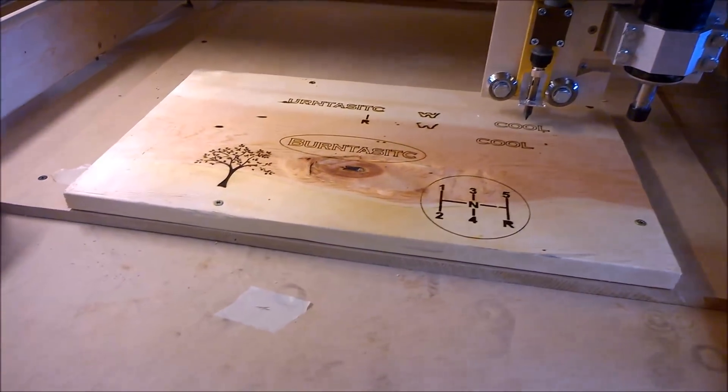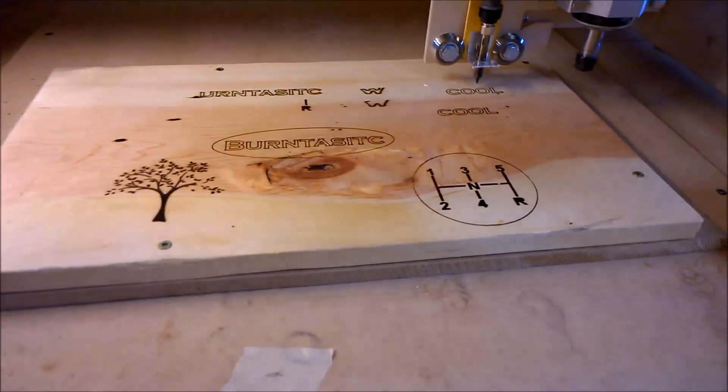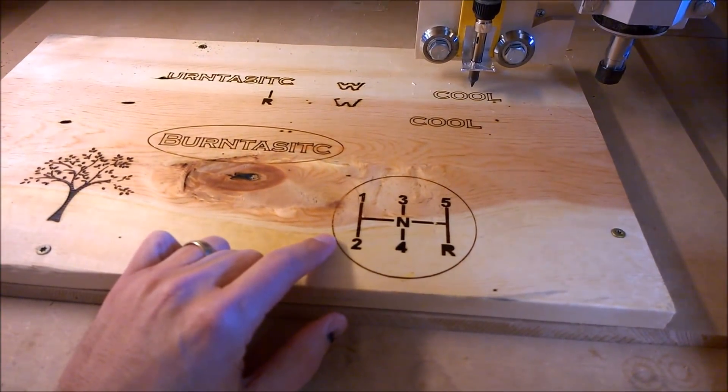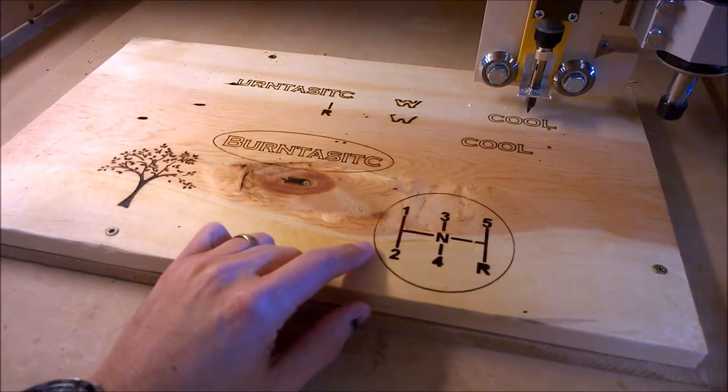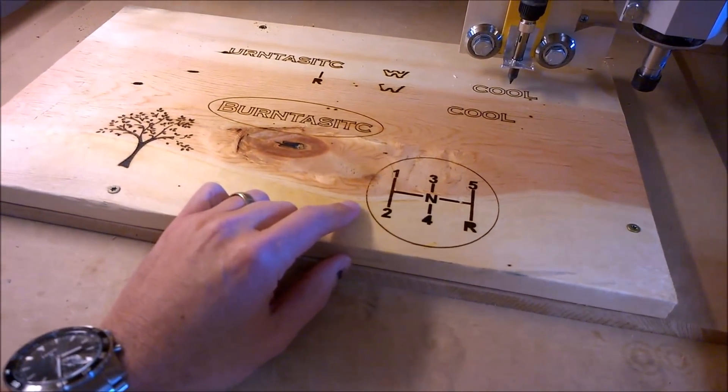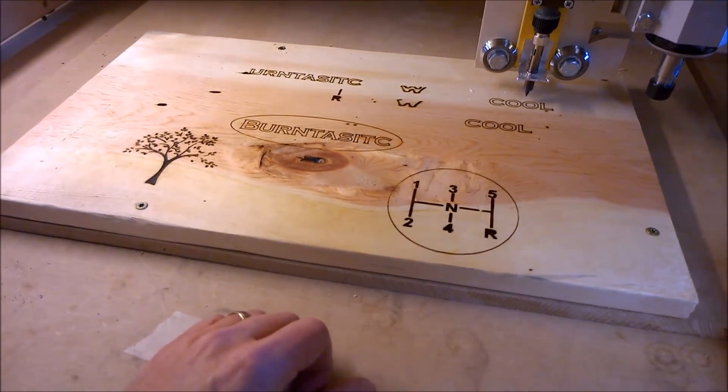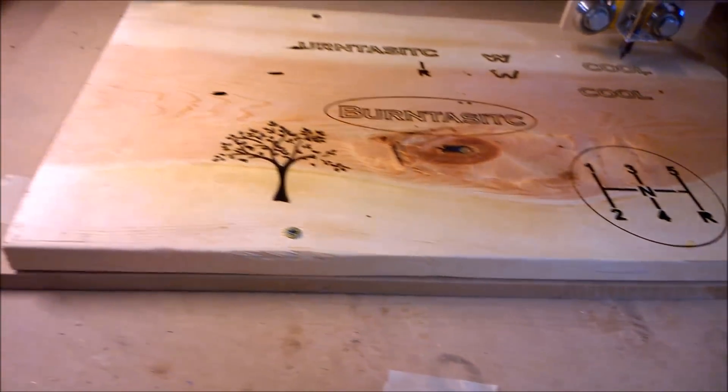Here are a couple extra designs I did in Inkscape real fast. These were just screen snips that I brought into Inkscape and I did a bitmap trace, converted it to an SVG, and then for the toolpaths I used Vectric Cut 2D, but there are a lot of free options as well.